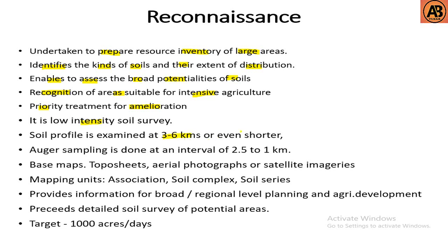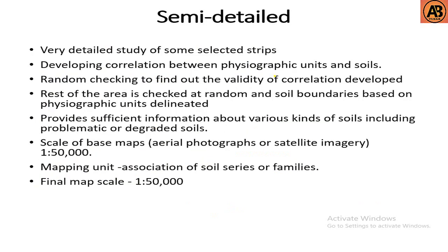In reconnaissance soil survey, the soil profile is examined at three to six kilometer intervals, or even shorter. Auger sampling is done at an interval of two point five to one kilometer. Base maps include topo sheets, aerial photographs, or satellite images. Mapping units include association soils and complex soil series. It provides information for broad regional-level planning and agricultural development, targeting around a thousand acres per day.